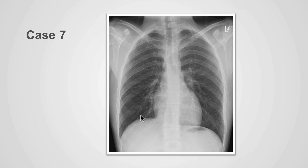Can you identify the pneumothorax in this case? Please pause the video and take a look. In this case, we can identify an edge that should not be present — this is the edge of the lung and the visceral pleura, with a small left-sided apical pneumothorax.